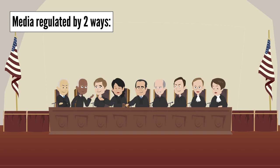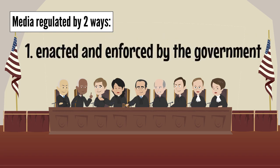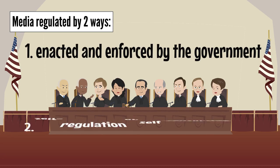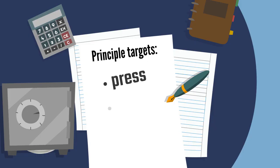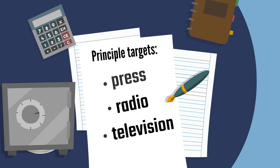There are two ways in which media are regulated. One is through provisions enacted and enforced by the government. Two is through self-regulation or self-censorship practices by media users. The principal targets of media regulation have been the press, radio, and television.